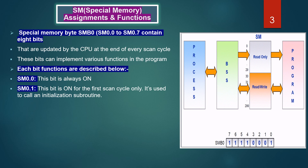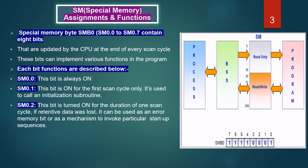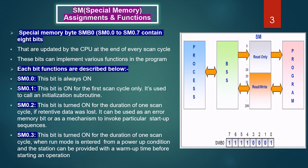SM 0.1: this bit is on for the first scan cycle only; it is used to call an initializing subroutine. SM 0.2: this bit is turned on for the duration of one scan cycle if retentive data was lost. It can be used as an error memory bit or as a mechanism to invoke particular start-up sequences.